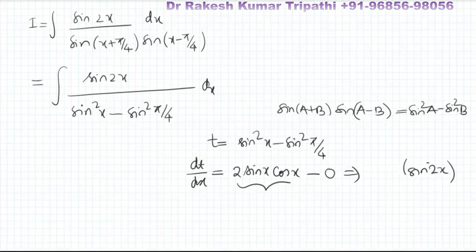Transferring dx to the right-hand side, the left-hand side will be dt. So you can see that this sin(2x)dx in the numerator can be replaced by dt.